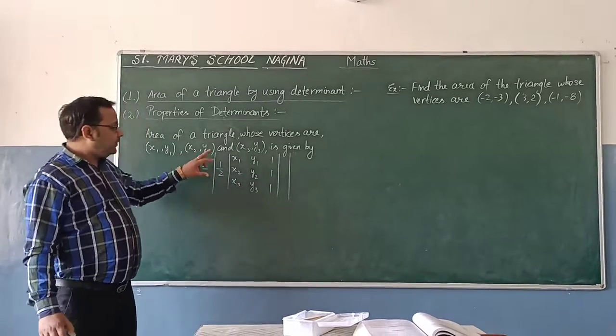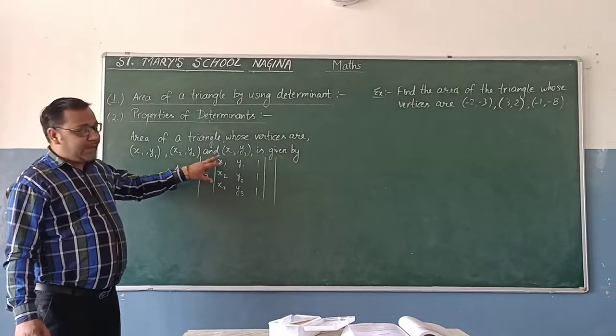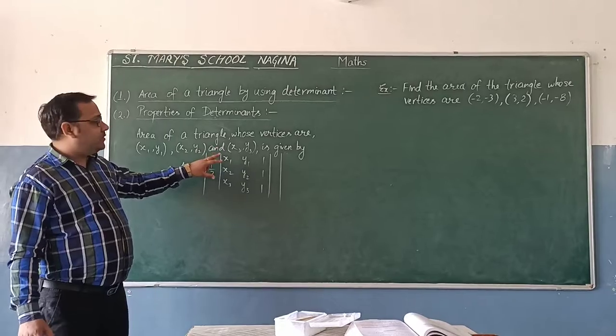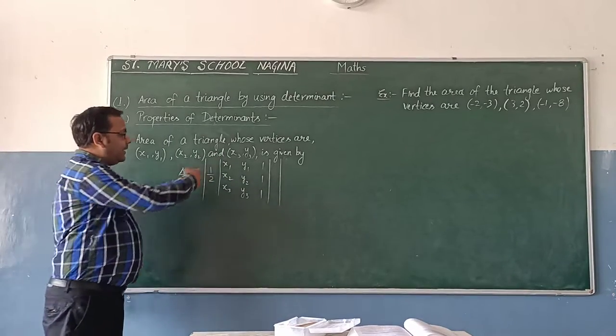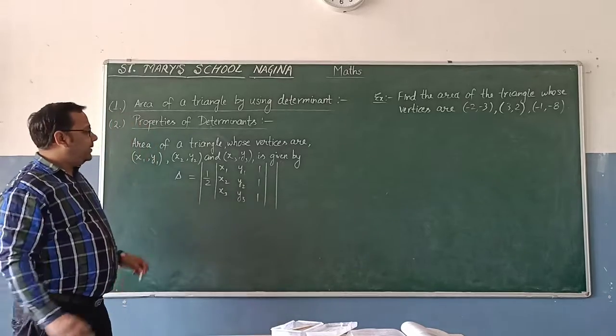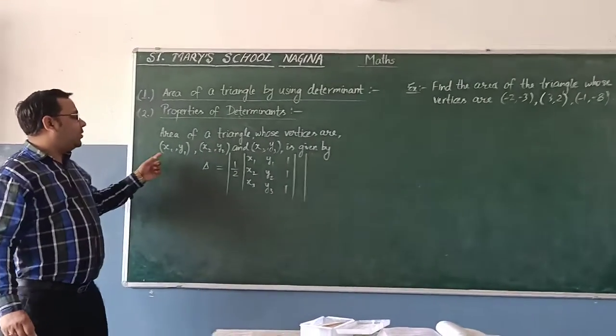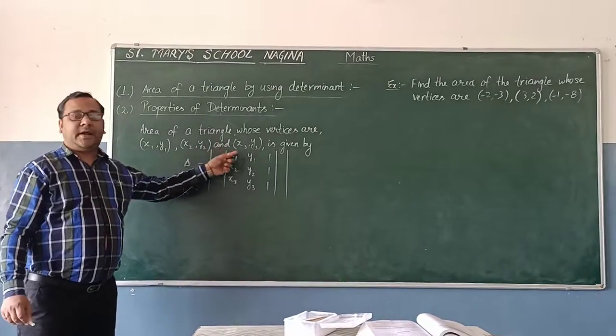Means, by using this formula, we can find an area of a triangle by using determinant. In this formula, these inner vertical bars denote determinant. x1, x2, x3 are the first coordinates of the vertices of the triangle.